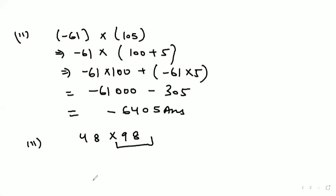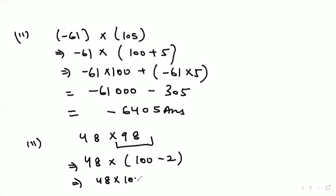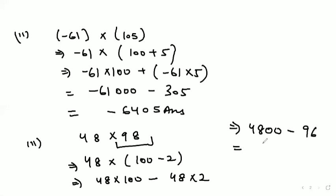Let's move to the third part: 48 into 98. Here we split 98, so it equals 48 into (100 minus 2). That gives 48 into 100, minus 48 into 2. 48 into 100 is 4,800, and 48 into 2 equals 96. So 4,800 minus 96 equals 4,704. This is our answer for the third part of question number 2.